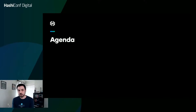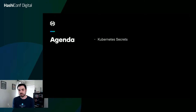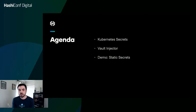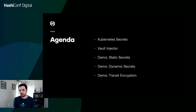This is mostly a demo-driven talk, but I'll go over a few things before the demos. First I'll talk about Kubernetes secrets, what they are, and some of the advantages of using something like the Vault Agent Injector, which is a solution by HashiCorp for consuming Vault secrets within Kubernetes. Then I'll do three demos: static secrets, dynamic secrets, and using transit encryption in Kubernetes.